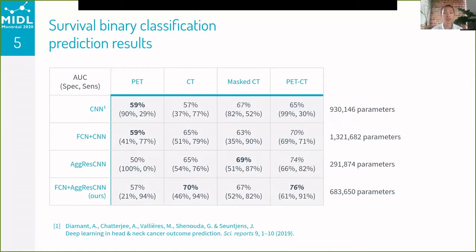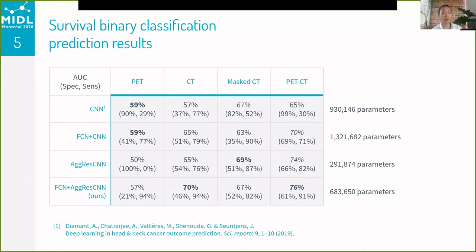Looking horizontally across each row, models in general perform best on the PET-CT inputs. Surprisingly, the baseline CNN performs best on the mask CT inputs rather than PET-CT — it could be that a reduction in noise is more beneficial than an increase in inputs for that model. For models using the FCN normalizer, performance ranks best on PET-CT, then CT, then mask CT, and finally PET images alone. We hypothesize the FCN is more effective at normalizing richer inputs, and given that CTs generally have higher pixel depth than PETs, this confirms our idea.